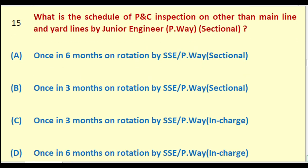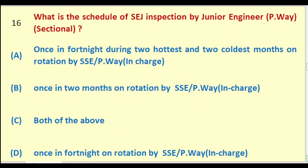What is the schedule of PNC inspection on other than main line and yard lines by Junior Engineer Permanent Way Sectional? Options: once in 6 months on rotation by SSE PW Sectional; once in 3 months on rotation by SSE PW Sectional; once in 3 months on rotation by SSE PW in charge; once in 6 months on rotation by SSE PW in charge. The right answer is: once in six months on rotation by SSE Permanent Way in charge.